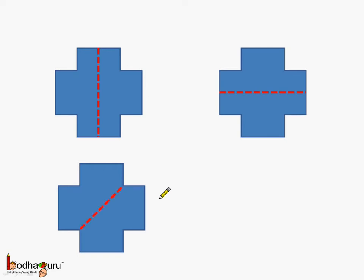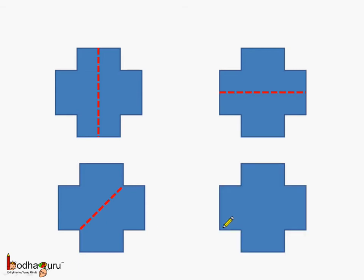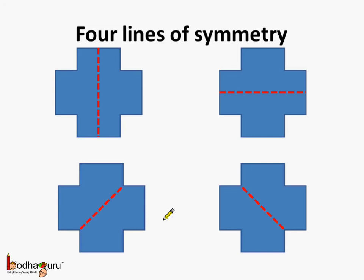Is there another way? Let us try diagonally. These two parts are identical halves again. The other way would be another diagonal, and here again we see these two are identical halves. So we can say this figure has four lines of symmetry.